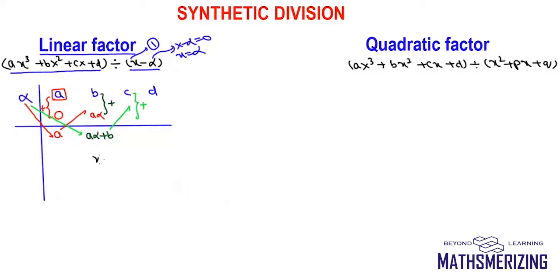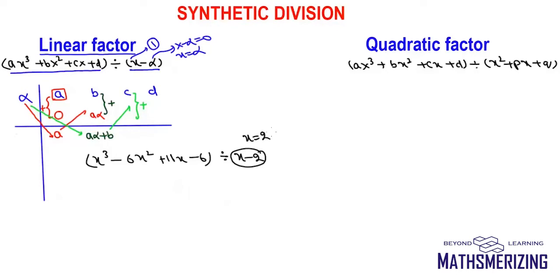For example, suppose I have to divide x³ − 6x² + 11x − 6 with x − 2. The coefficient of x is 1 and the root is 2, so I will draw two lines, write 2 on the left, and write the coefficients 1, −6, 11, and −6.